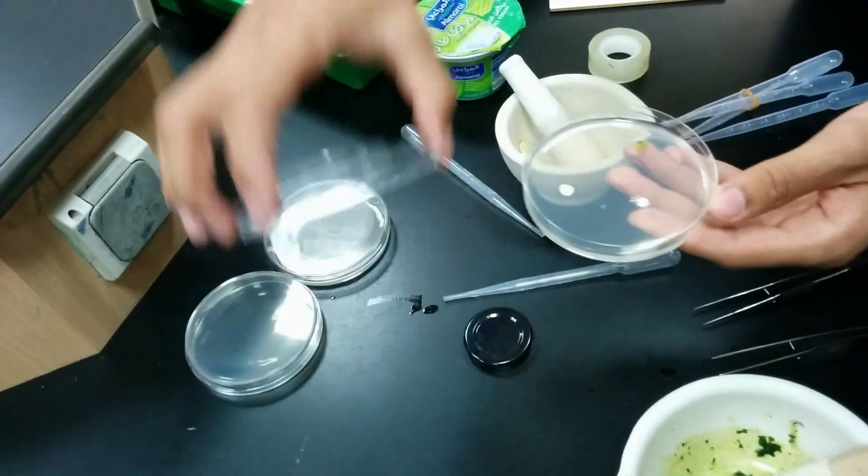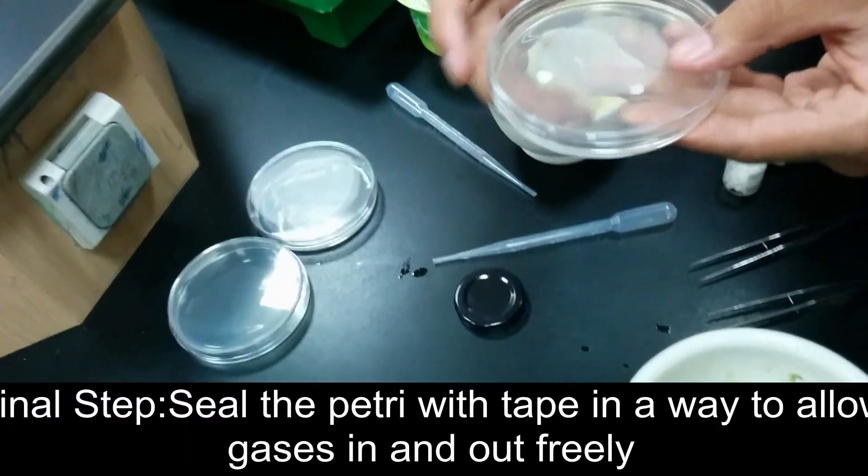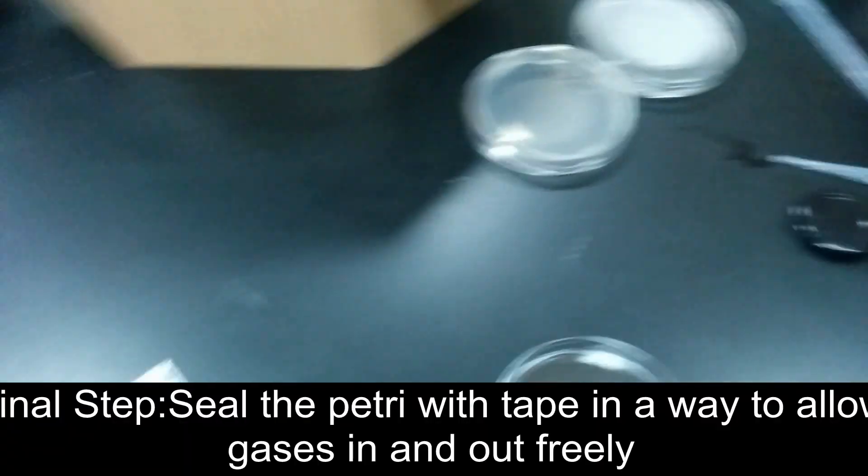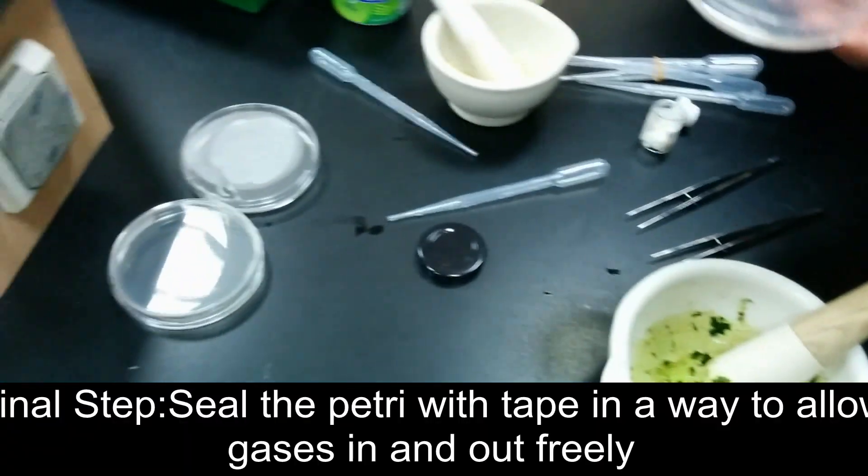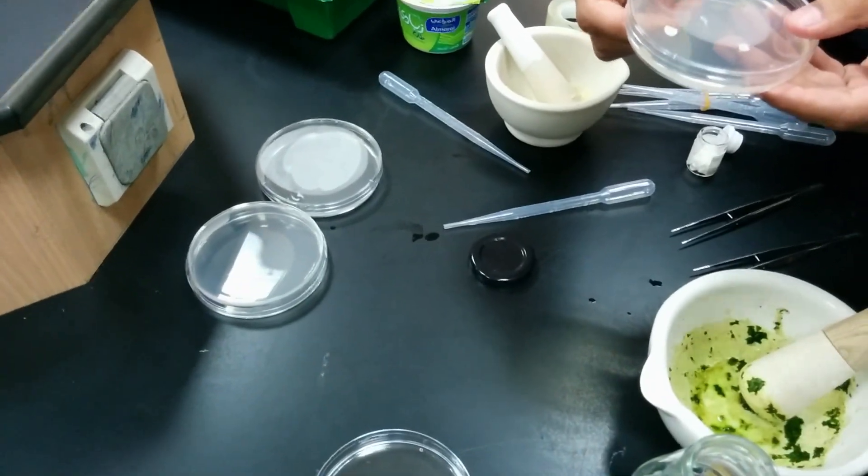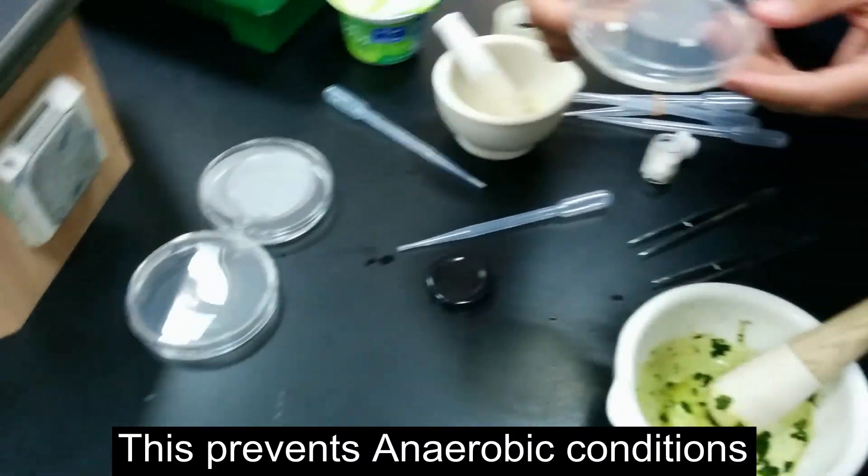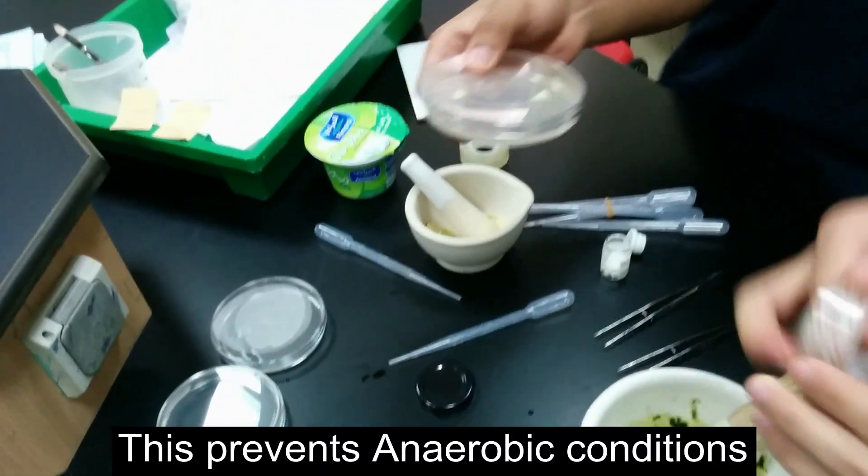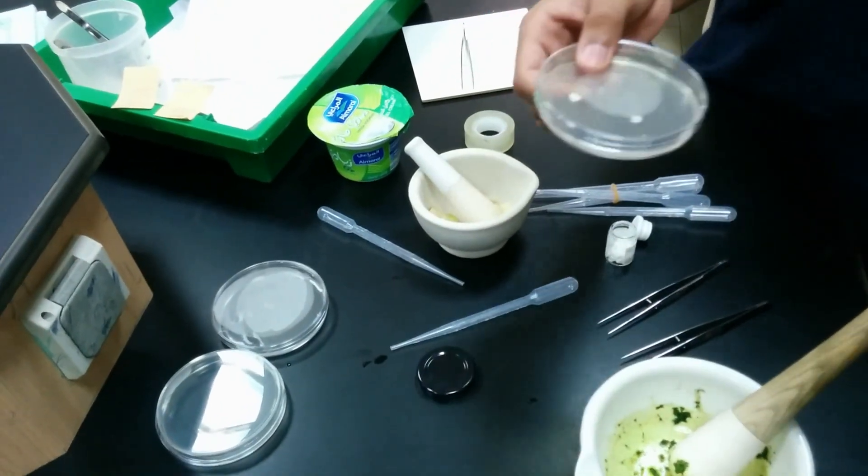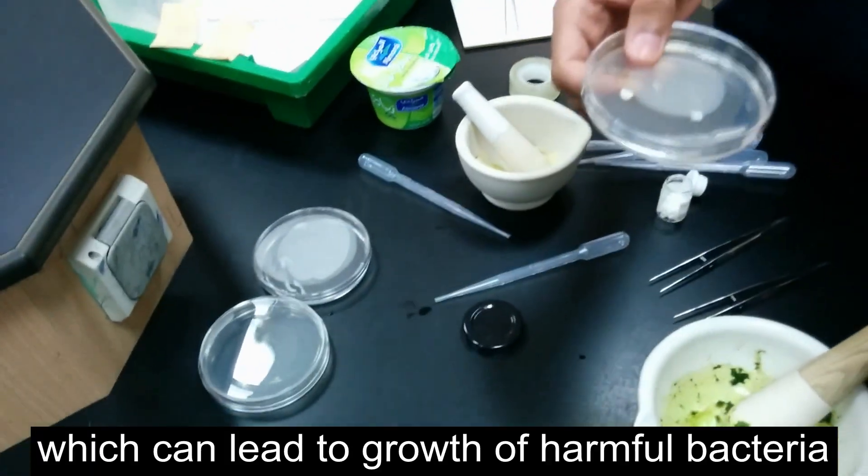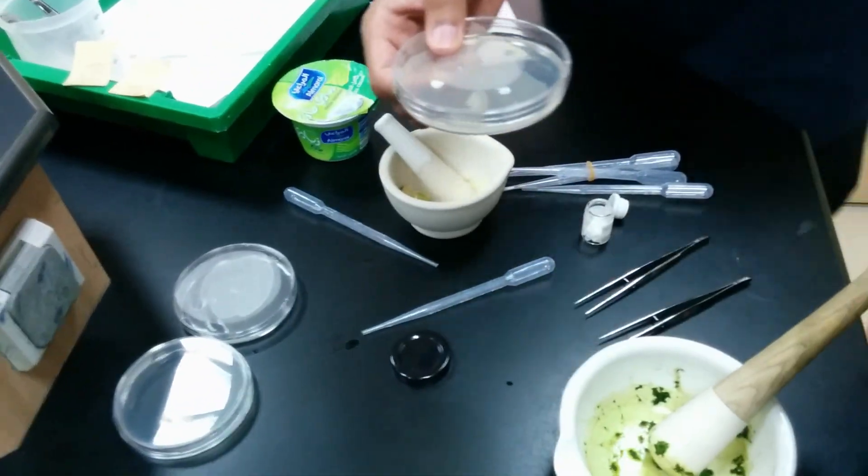Now we have to seal the petri dish with tape. However, it should be sealed in a way to allow gases in and out. By doing this, we would prevent anaerobic conditions, which could lead to growth of harmful bacteria.